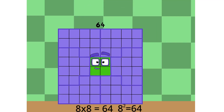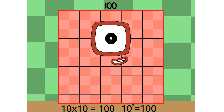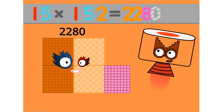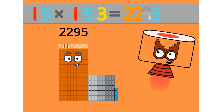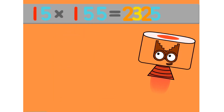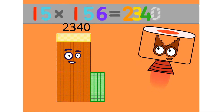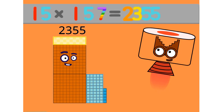15 times 151 equals 2265. 15 times 152 equals 2280. 15 times 153 equals 2295. 15 times 154 equals 2310. 15 times 155 equals 2325. 15 times 156 equals 2340. 15 times 157 equals 2355.